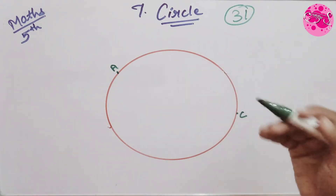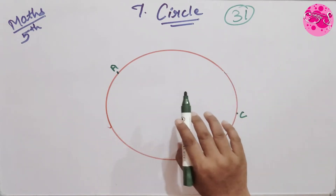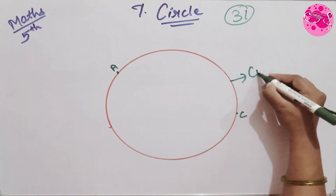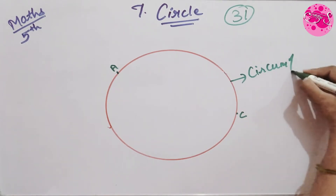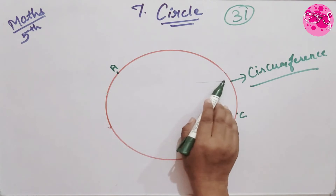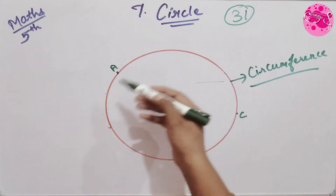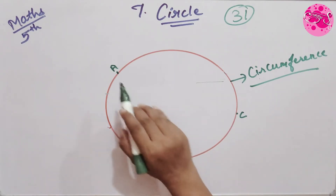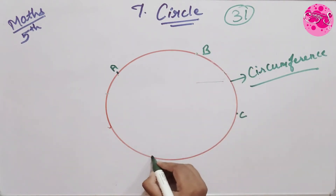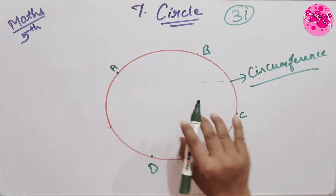Before solving problem set 31, just look at a few points. Now children, you can see this circle. The boundary of a circle is called a circumference, and the length of the boundary of a circle is called its circumference. To understand it clearly, be with me till the end.